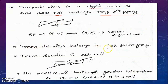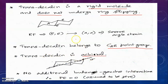Trans-decalin belongs to the C2h point group. In the C2h point group we have a plane of symmetry. Whenever a molecule possesses a plane of symmetry it must be achiral, so trans-decalin is achiral. Moreover, at the ring-fused carbons there are no additional butane-gauche interactions introduced in the molecule.